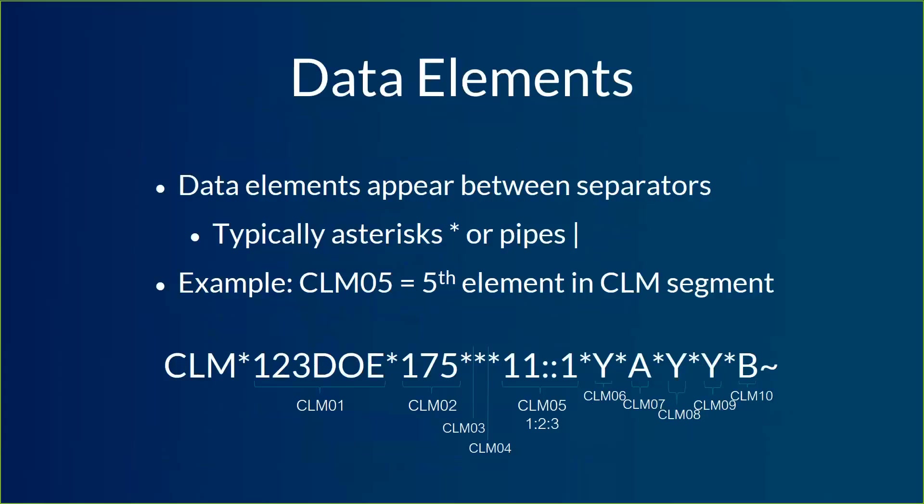CLM05 is a little bit interesting — there's such a thing with certain data elements as subpositions. When there's a subposition present, there's going to be a different type of separator, in this case a colon — usually it's either a colon or a caret, which is the symbol above the six on your keyboard. So in CLM05 subposition 1 we've got 11, in CLM05 subposition 2 there's the bit in between the colons, and in CLM05 subposition 3 we've got the value 1. When we write it out, we do CLM05-1 or CLM05^1 — those are both common ways of indicating a subposition.